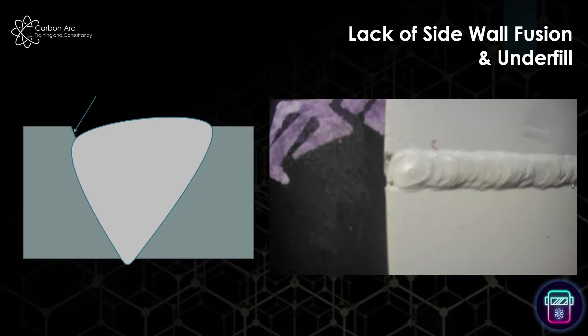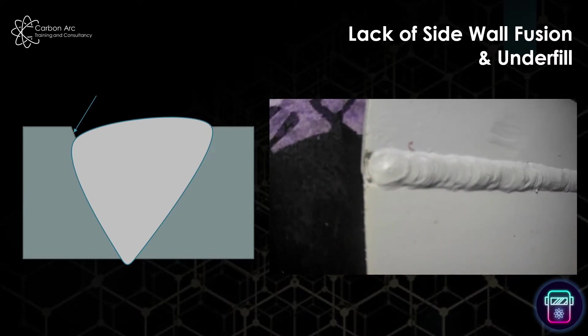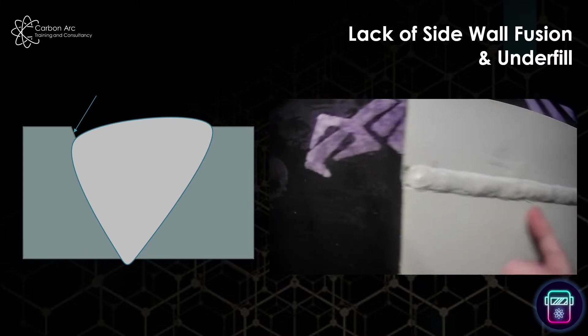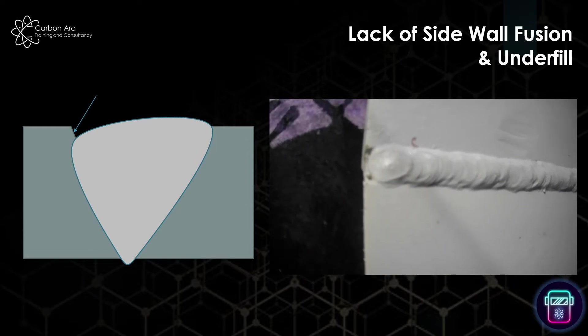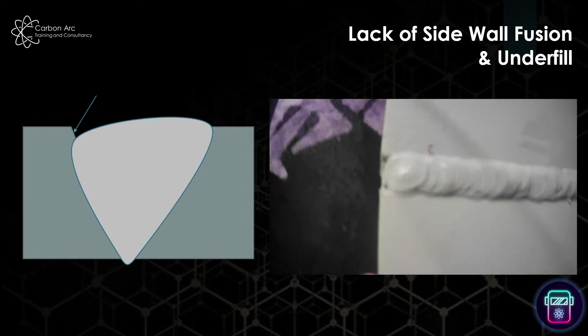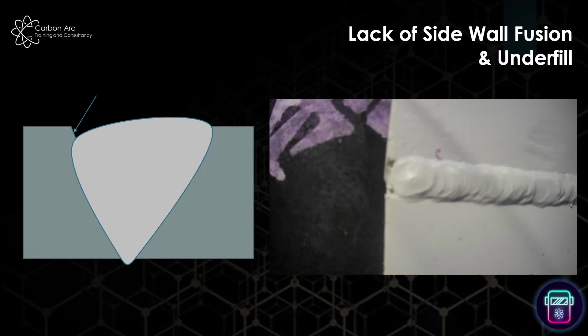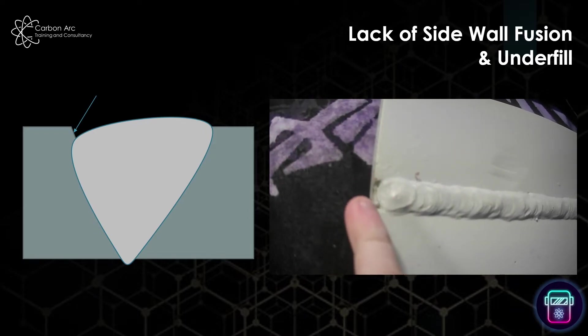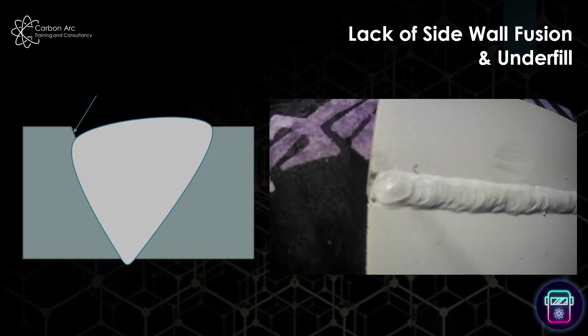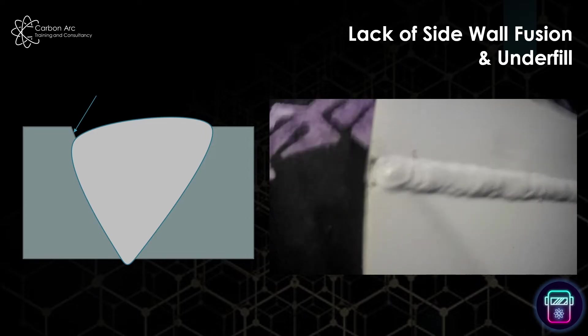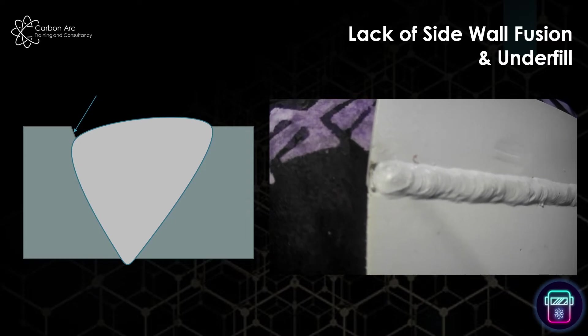The effect is a lack of sidewall fusion and underfill. Here we've got particularly at the ends of plates where you don't have a run-on run-off plate, it becomes more difficult to complete the weld at the end. So we can see the weld actually finishes just before the end of the plate and we miss the sidewalls because of that. In most weld inspection exams you'll be asked to call up two defects - both the underfill because the joint hasn't been completed,